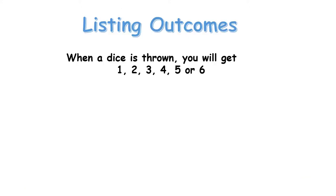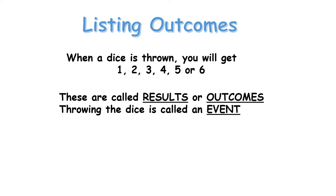Now let's look at listing outcomes. When a dice is thrown, you will get a 1, 2, 3, 4, 5 or 6 - each of these results are called an outcome. Throwing the dice is called an event. So each event has outcomes, and we generally work out the probability of these outcomes.